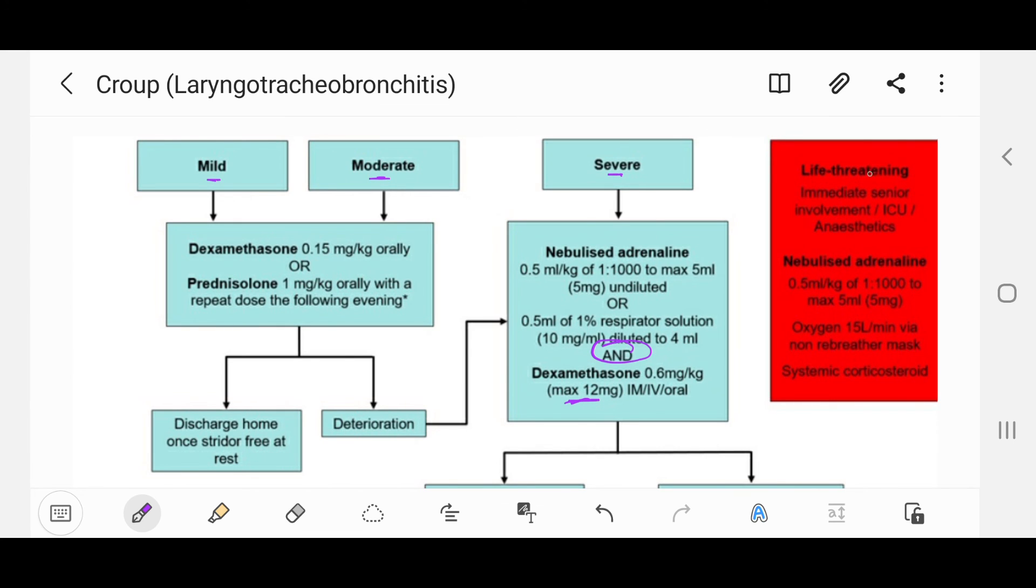If we suspect life-threatening croup at any time, we should immediately contact the senior, the ICU, and anesthetics. Then we should give nebulized adrenaline 0.5 ml per kg of 1 to 1000 to maximum 5 ml or 5 mg, and we give also oxygen 15 liters per minute via non-rebreather mask, and we give systemic corticosteroids.